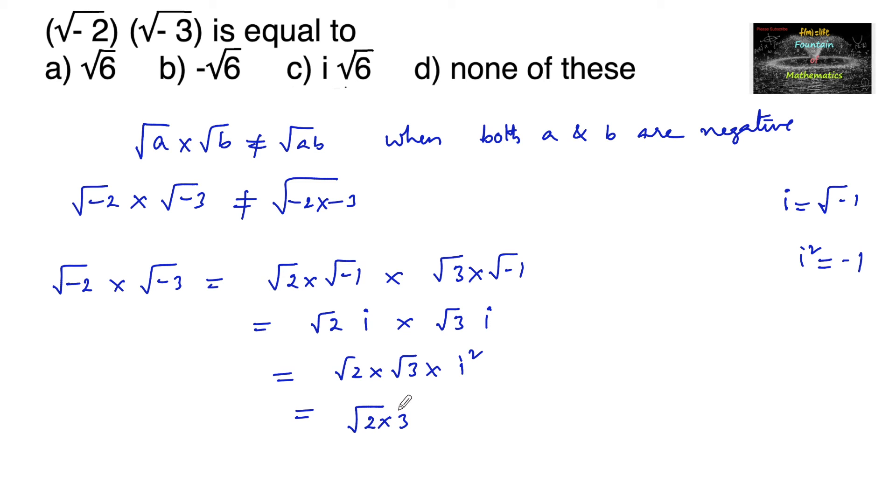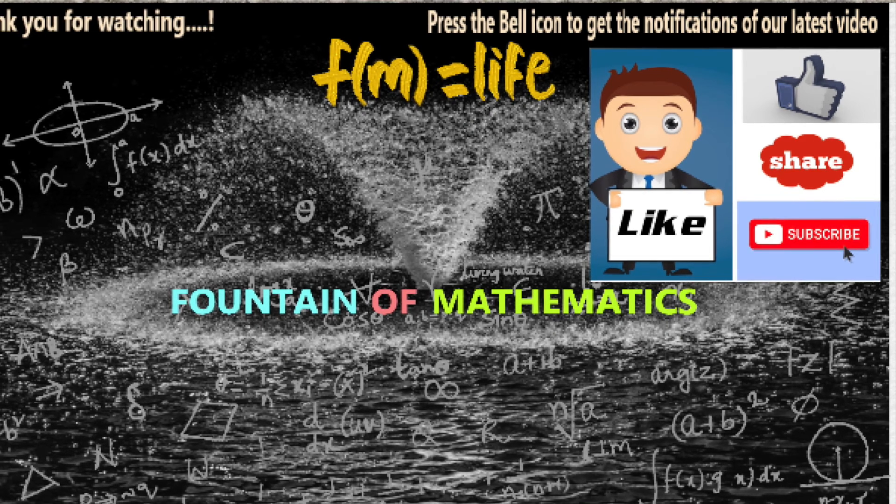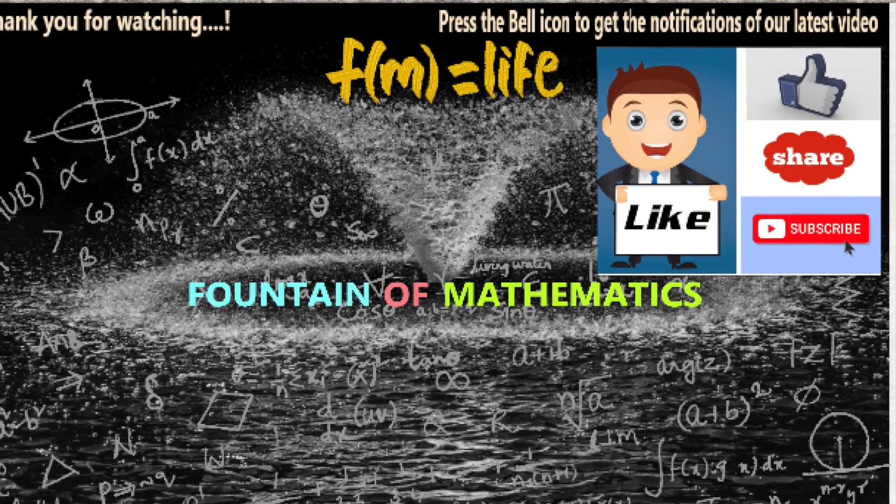So root of 2 into 3, and i squared is minus 1, so we can write minus. So minus root 6 is the answer, which is our option b.